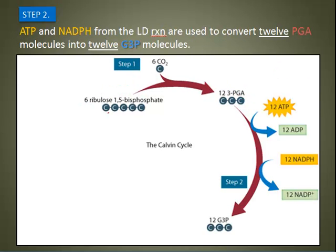In step two, ATP and NADPH that were made during the light-dependent reactions are used to convert 12 PGA molecules into 12 G3P molecules. Twelve ATP and 12 NADPH are used — one ATP and one NADPH for every conversion. When ATP is used, it is converted into ADP. Each PGA molecule receives one phosphate from ATP to produce an intermediate molecule called 3-phosphoglycerate, or PGAL.